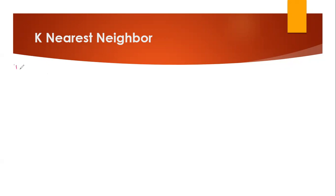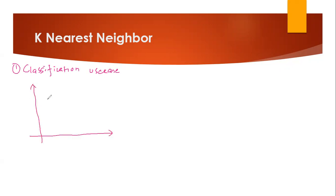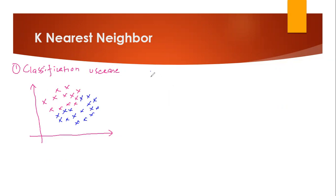Let's go ahead and understand how K-Nearest Neighbor works with an example. First, I'll consider a classification problem. I have some data points with two categories — one category and another drawn in blue points. In K-Nearest Neighbor, we need to select a K value, which indicates how many nearest neighbors we are going to consider.